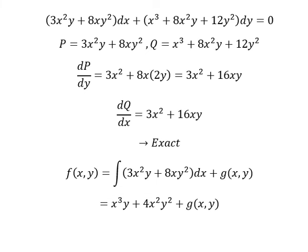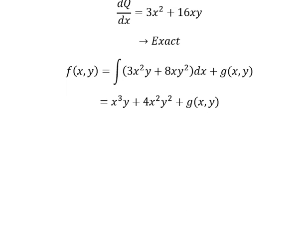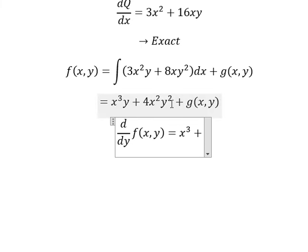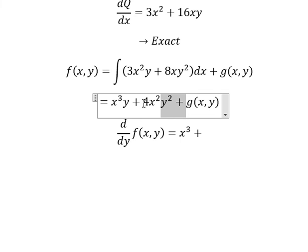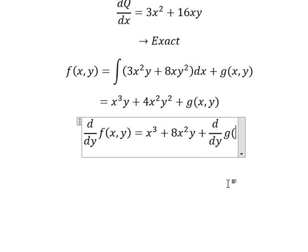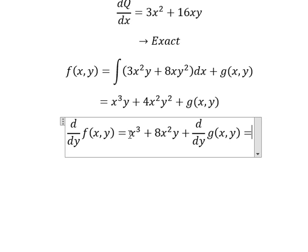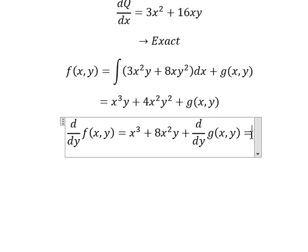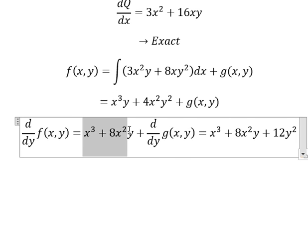Now we need to do first derivative of f with respect to y. So this one we have one. This one we have two y. So four and two we have eight. And we have d over dy of g(x,y). So we know that this one equals to this one. And now we simplify this one for both sides.